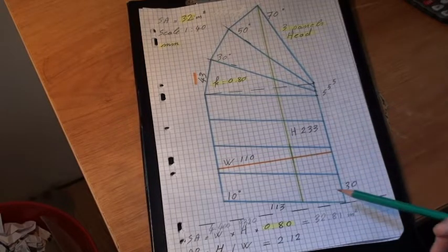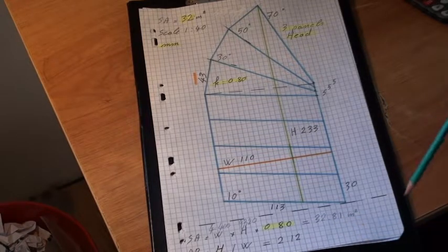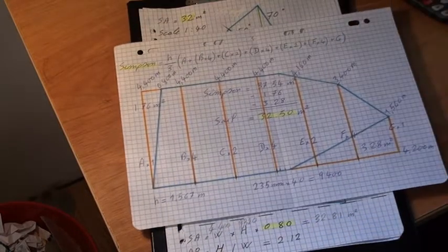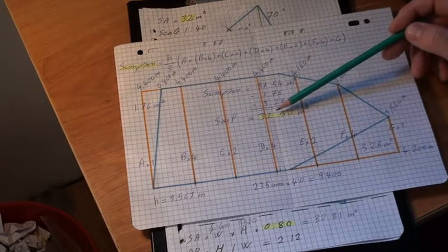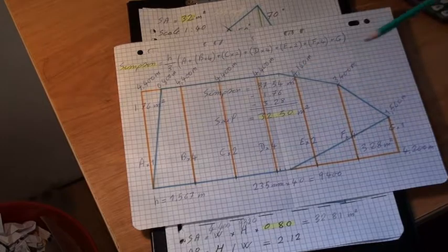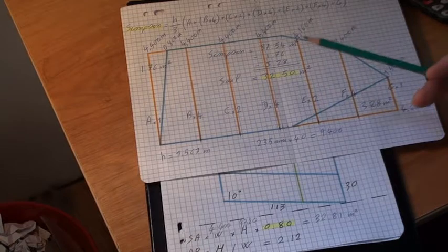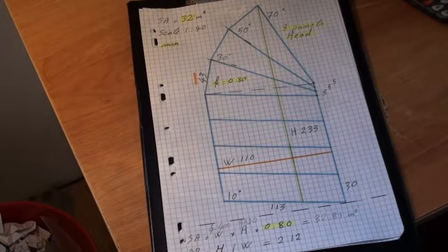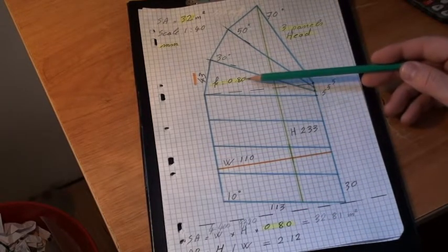And for this example here, we've got the area of 32.81 square meters. Now if you compare it with the Simpson formula, it gave us 32.2 square meters.